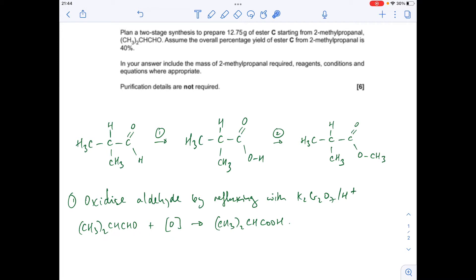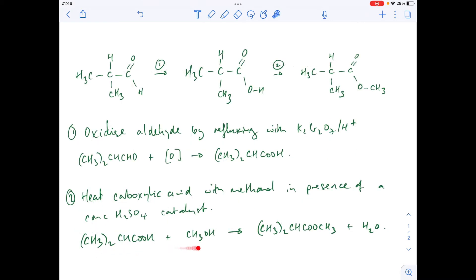Moving on to step 2, we've got to turn this carboxylic acid group into the ester. It's a methyl ester, so we're going to use methanol and heat the carboxylic acid with the methanol in the presence of a concentrated sulfuric acid catalyst. So there's that written up there and there's the equation.